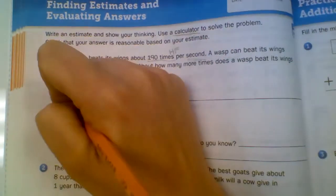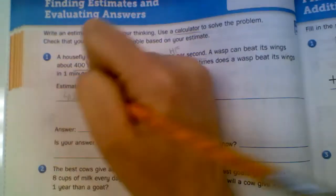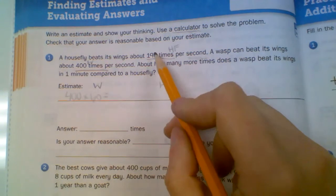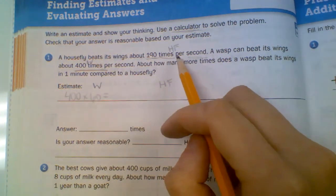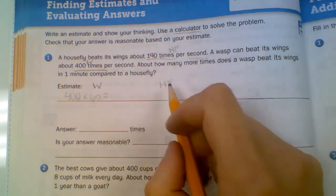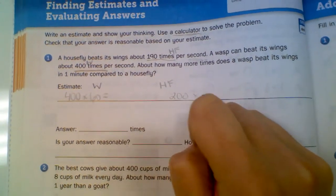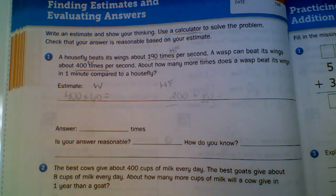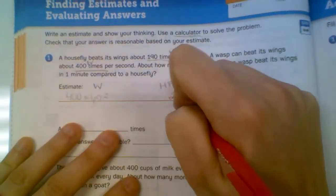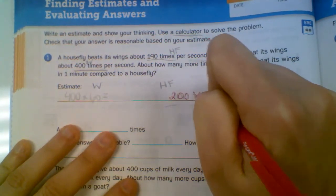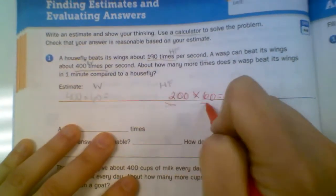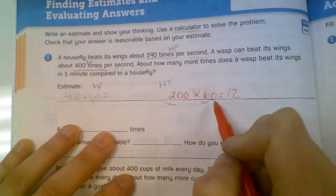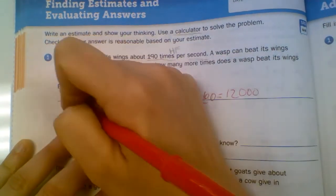So here we go. So wasp is 400 times 60 equals. Okay, housefly, 190. Is that as nice to see? No. So I'm going to do 200 times 60 because those are friendly numbers. So 200 times 60 equals. So we take our friendly numbers. 2 times 6 is 12. Count our zeros. 1, 2, 3. 1, 2, 3.